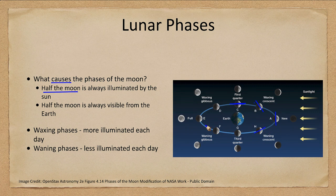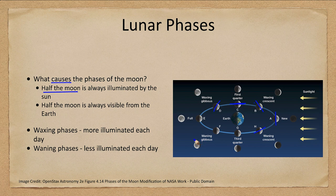Depending on the combination of those two factors, we will see more or less of the moon illuminated as we look at it. In the crescent section we'll be seeing less than half of the side illuminated, and in the gibbous section we'll be seeing more. Because we can see half the moon illuminated and half the moon is visible from Earth, we will see different phases as the moon moves around Earth.